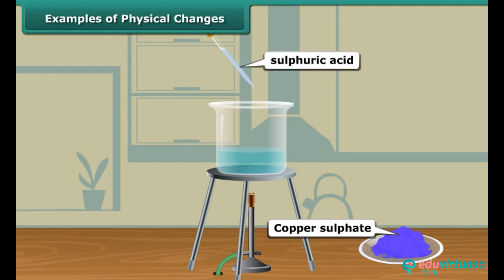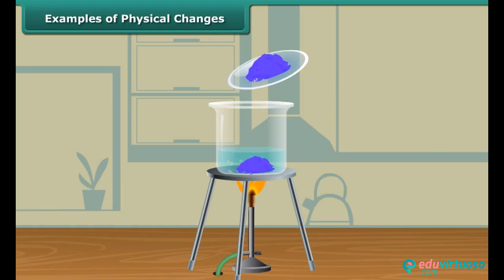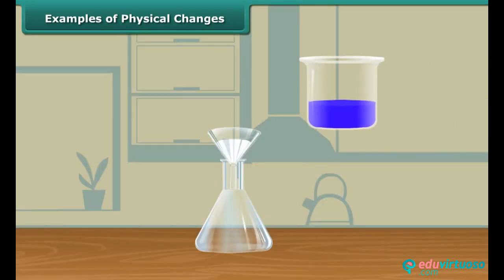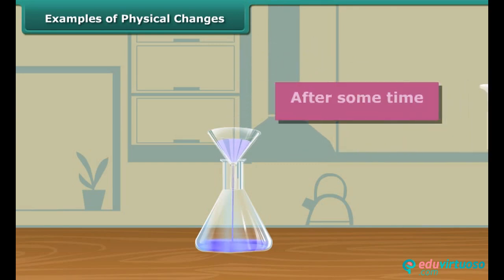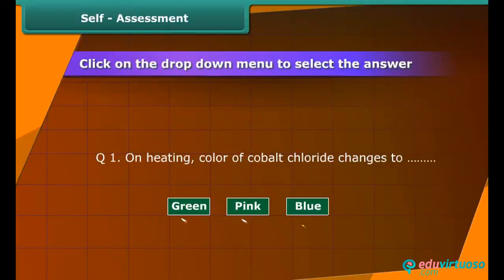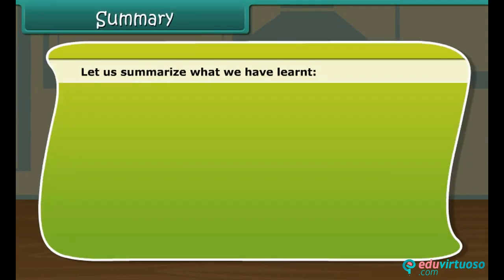Heat the water, and when it starts boiling add copper sulfate powder slowly with continuous stirring until a saturated solution is obtained. Filter the solution and allow it to cool. After some time you will see blue colored shining crystals of copper sulfate in the solution.